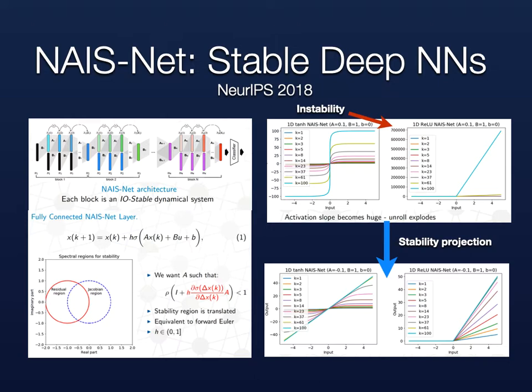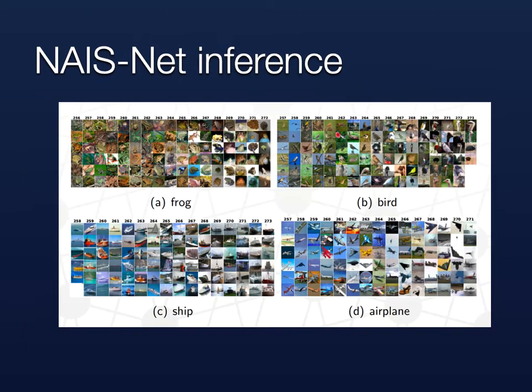We trained for a fixed unrolled length, then at test time we used a stopping criterion based on the residual. We tested the approach on CIFAR-10, where the algorithm was not only able to generalize as well as the state of the art, but was also able to cluster pictures with similar texture in terms of unrolled depth. In summary, NASNet learns to stop at similar unrolled lengths for pictures with similar texture or difficulty, which is quite interesting in terms of explainability and adaptive computation.